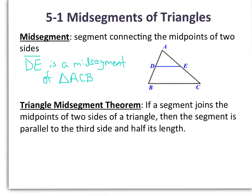The triangle midsegment theorem says if a segment joins the midpoints of two sides of a triangle, then the segment is parallel to the third side and half its length. So again, referring to our triangle, we could say that DE is parallel to BC, and that DE would be equal to one-half of BC's length.